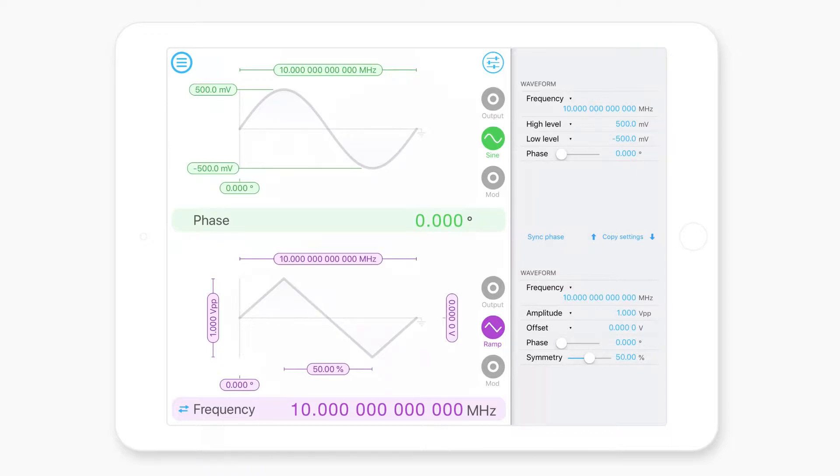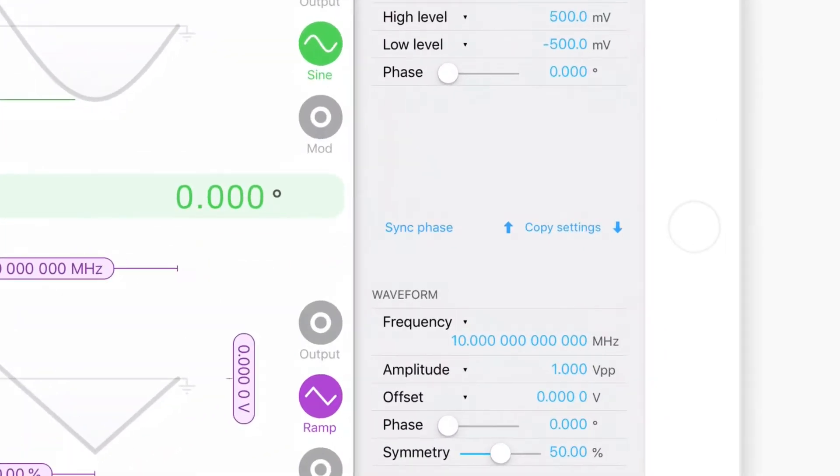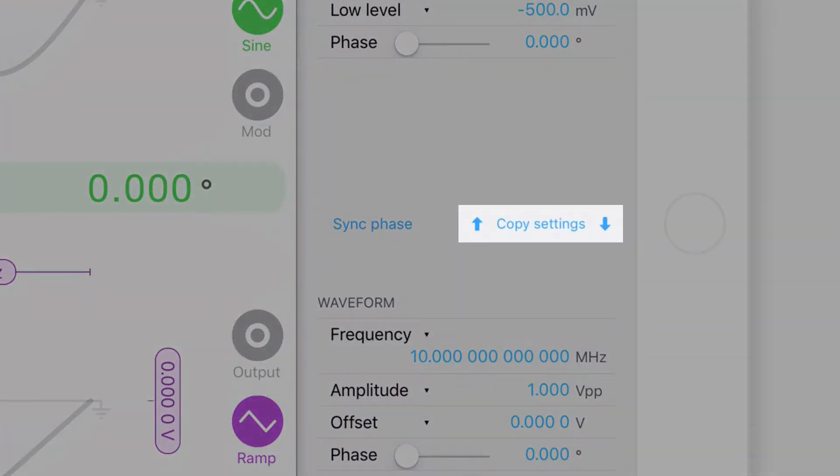The other thing that you can do here is copy settings from one channel to the other. You can do this by hitting the up or down arrows to either side of the copy settings text.